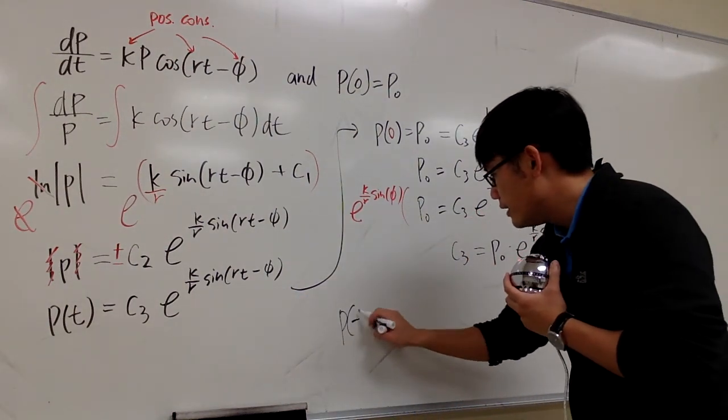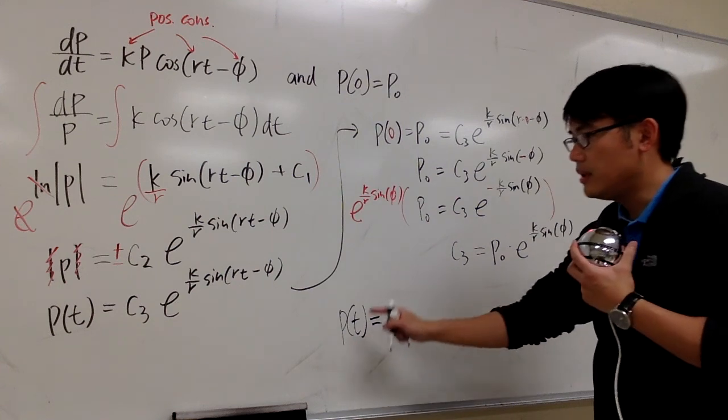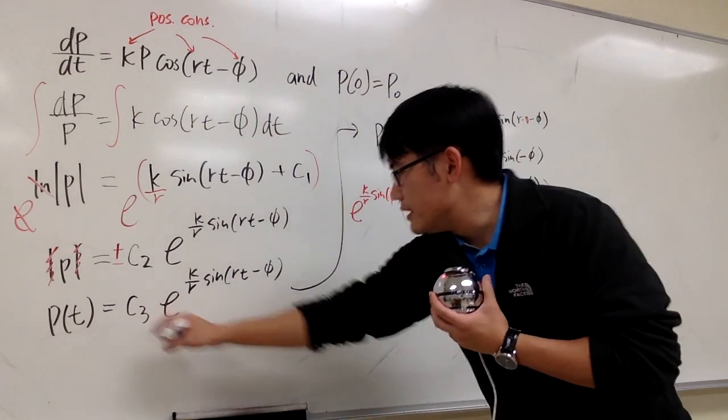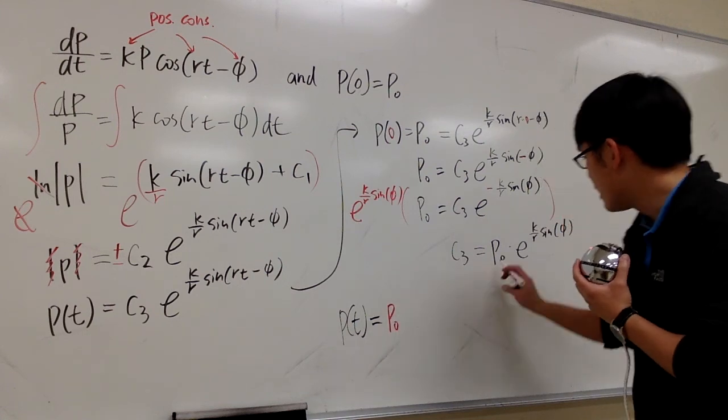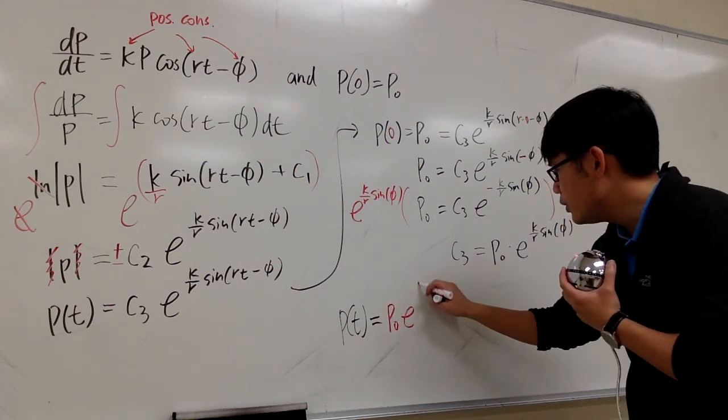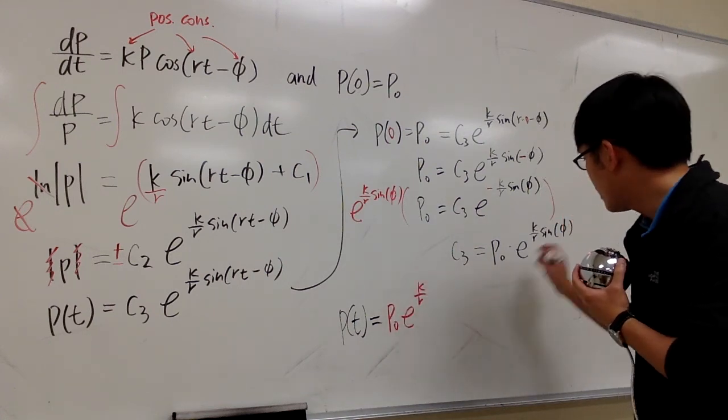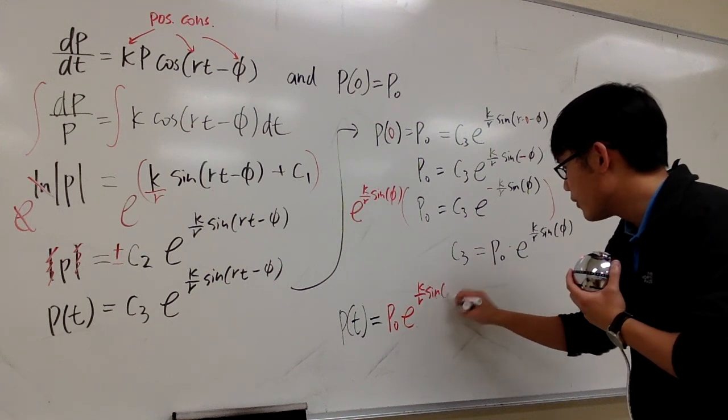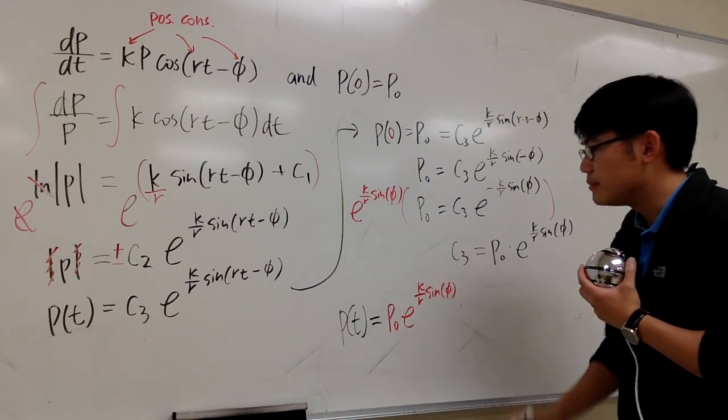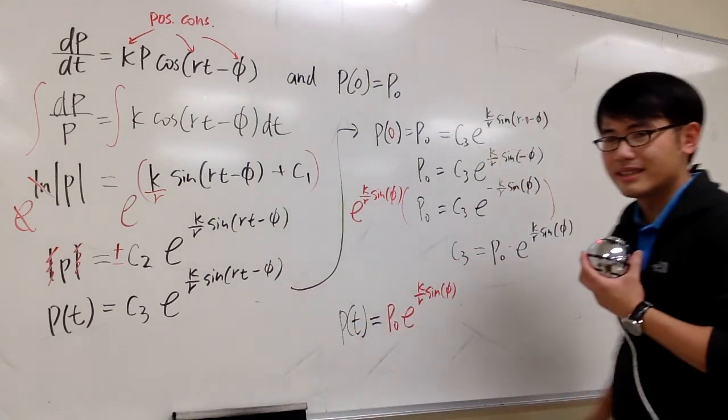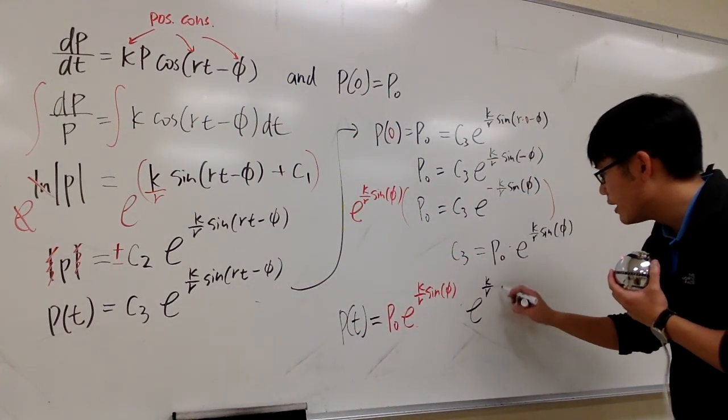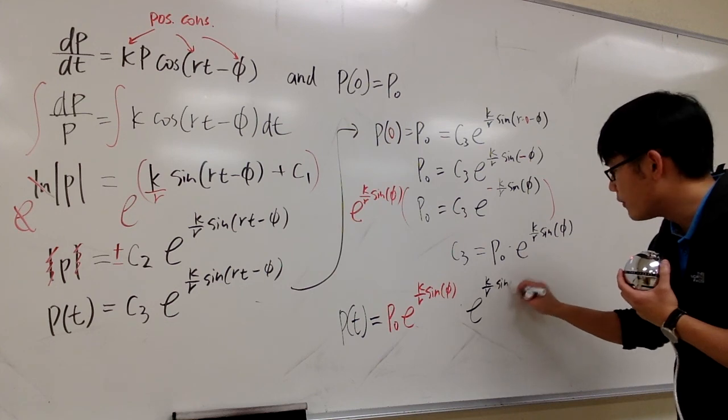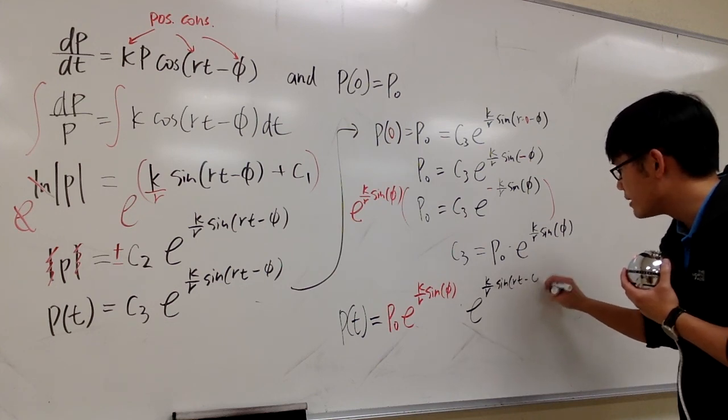So finally, the answer is p(t), p as a function of time. We have c3, which is equal to this. And we'll write it down as p0 times e to the k over r, sine of v, times this part, which is e to the k over r, times sine of rt minus v.